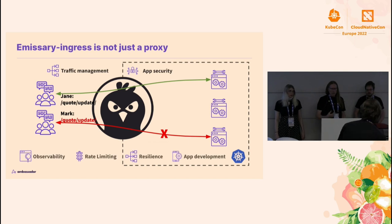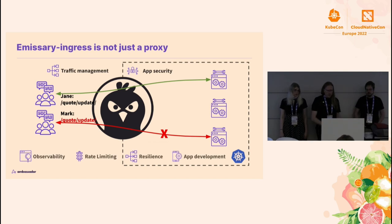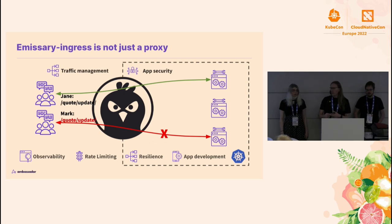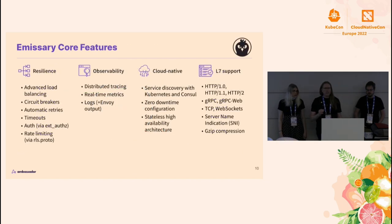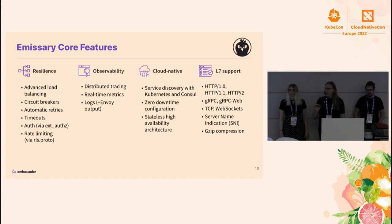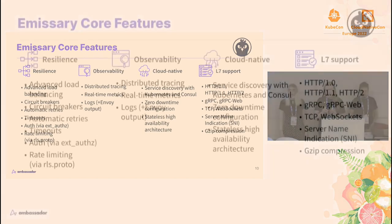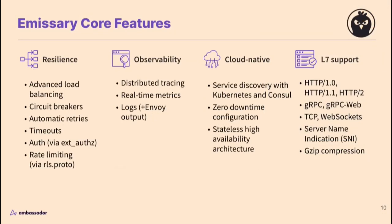Other things that are really useful to bring in: there's observability, there's rate limiting, there's a bunch of resilience and development stuff. A lot of these end up overlapping with service meshes, and that's okay. The API gateway and the service mesh are different roles. You can, if you set things up correctly, mix and match these functions to take care of them at the level that makes sense for your organization and use case.